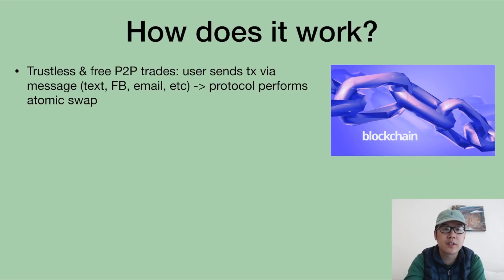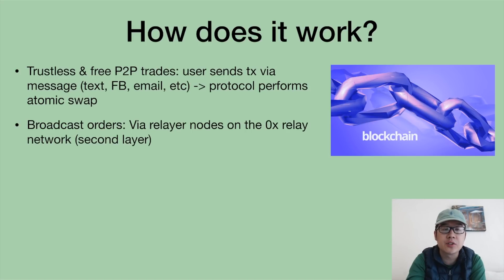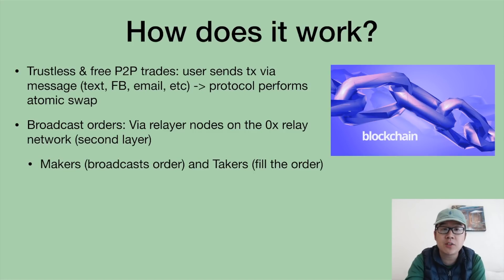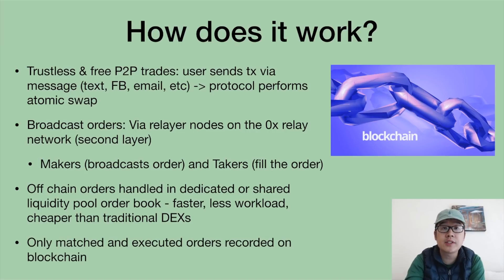How does this all work? First, you can do trustless point-to-point trades in which a user sends a transaction via a message — like text, Facebook message, or email — and the protocol performs a simple atomic swap between the two token types. There are also broadcast orders, where you use relayer nodes on the ZeroX Relay Network, which is kind of like a second-layer Lightning Network-type solution. Makers broadcast orders and takers fill them. Off-chain orders are handled in dedicated or shared liquidity pool order books, which makes it faster, decreases workload, and makes it cheaper in terms of gas than traditional decentralized exchanges.